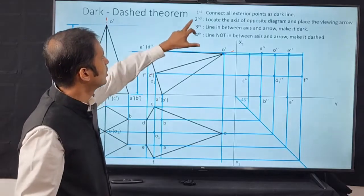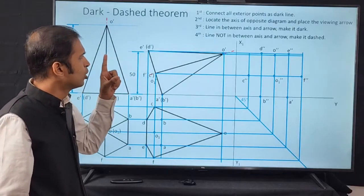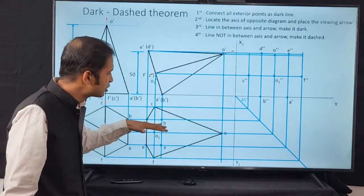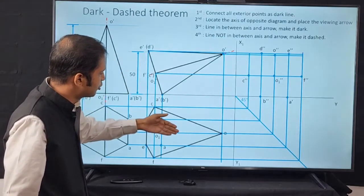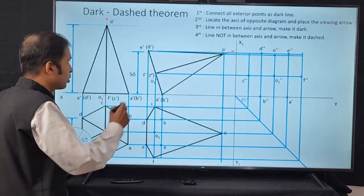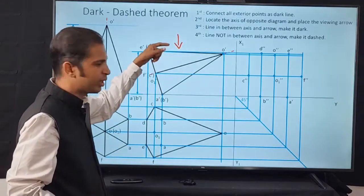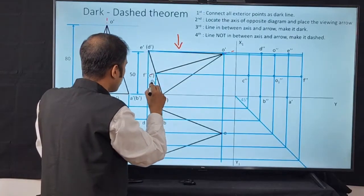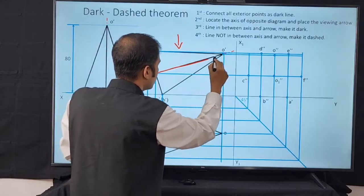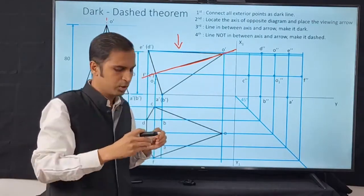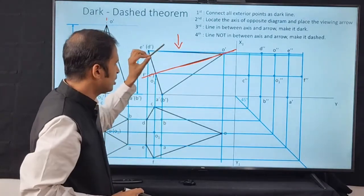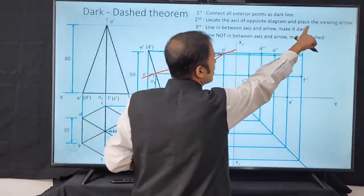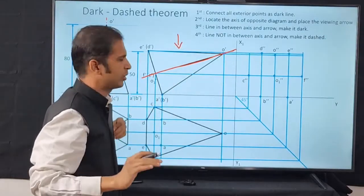Step 2: Locate the axis of the opposite diagram and place the viewing arrow. The diagram you want to create is the top view — the opposite diagram is the front view. Find the axis of the opposite diagram: O appears here and here, so that line is the axis. In the exam, instead of drawing a line, just place your pen or scale along the axis and mark the viewing arrow lightly with your pencil.